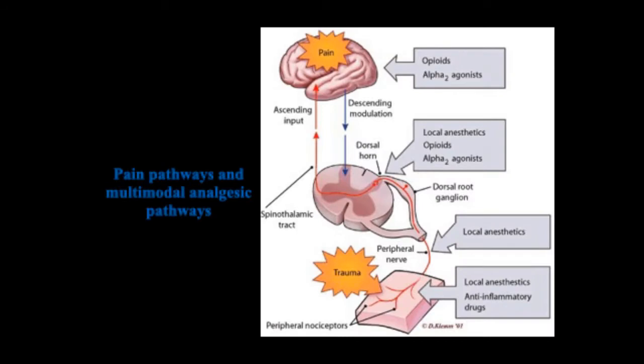When there is trauma to a tissue, pain travels from the peripheral receptors through the peripheral nerves and the dorsal root ganglion to the dorsal horn of the spinal cord. Then pain signals travel through the spinothalamic tract to the pain center in the brain.